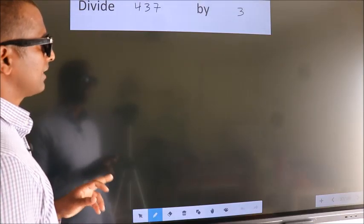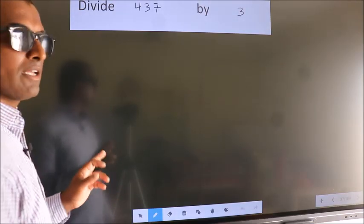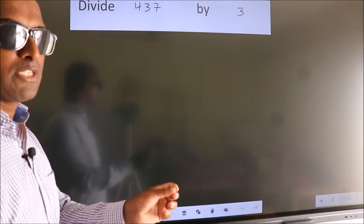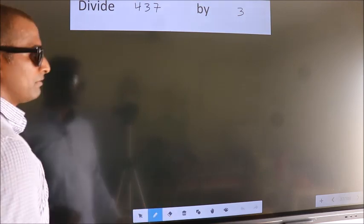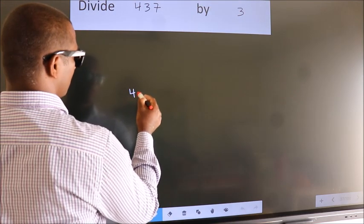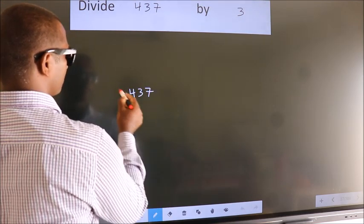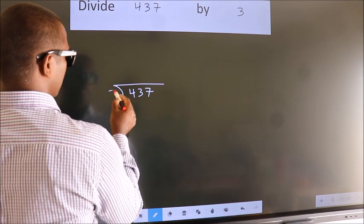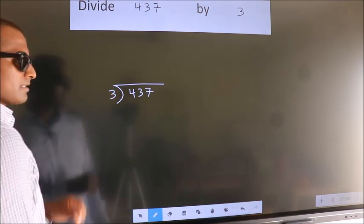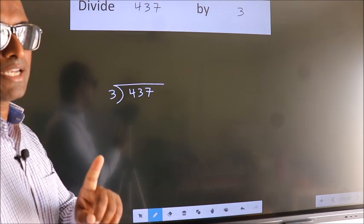Divide 437 by 3. To do this division, we should frame it in this way. 437 here, 3 here. This is your step 1.